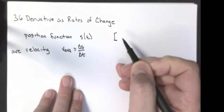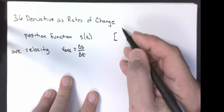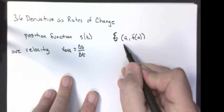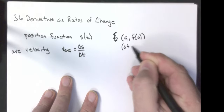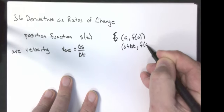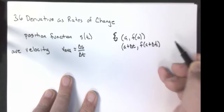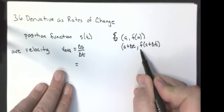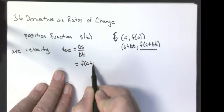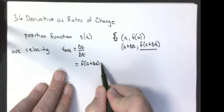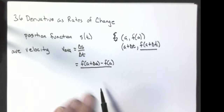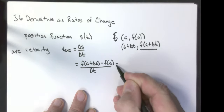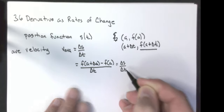From any point, we're going to go from the points A, F of A, to the point A plus delta T — whatever my change of time was — to F of A plus delta T. My average velocity function would be the change of my Y values, which is F of A plus delta T minus F of A, over A plus delta T minus A, which is just my delta T. That's the change in S over the change of T — that's my average velocity.